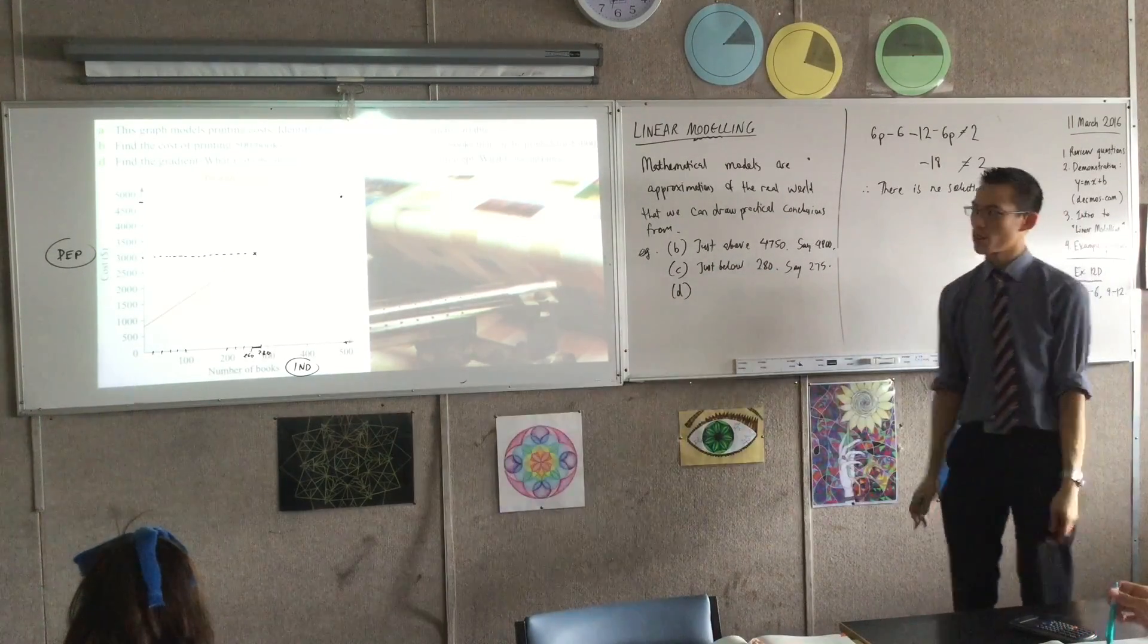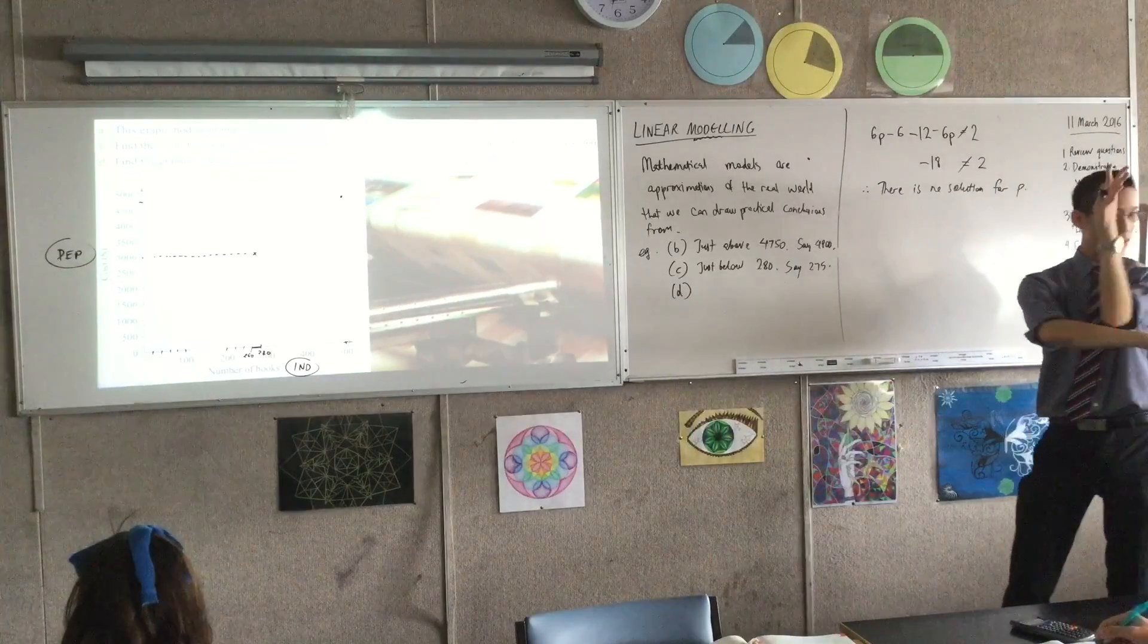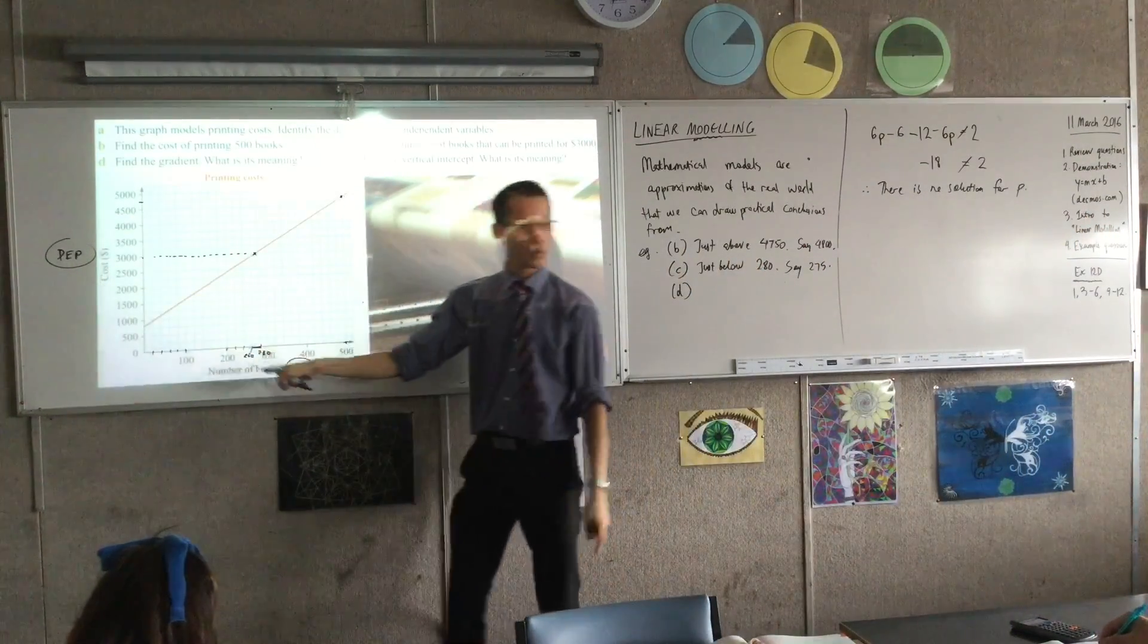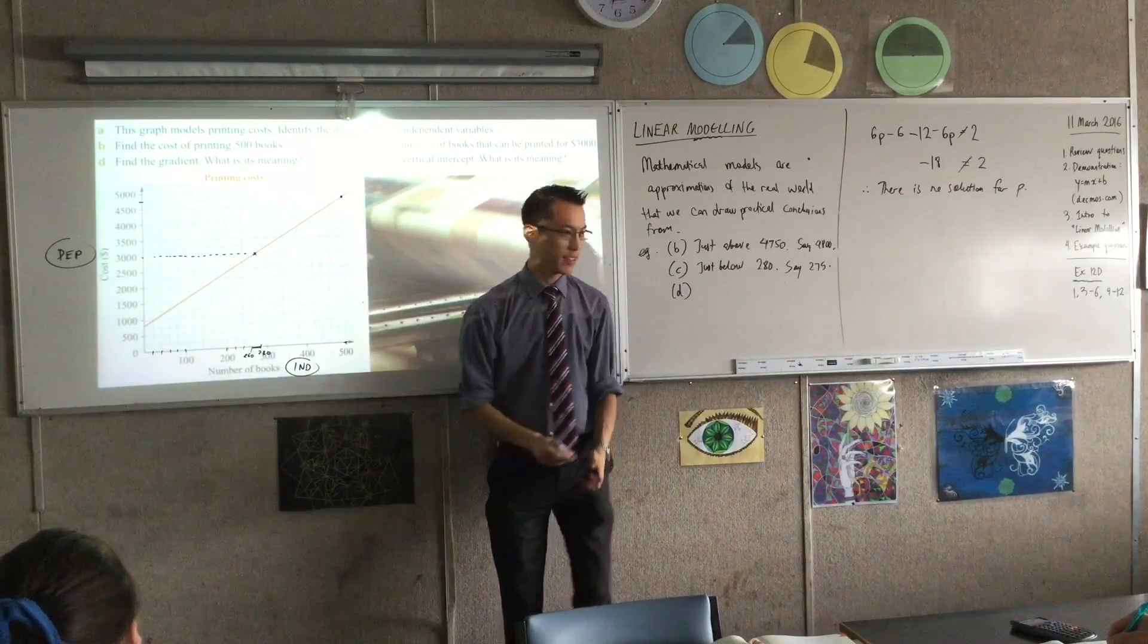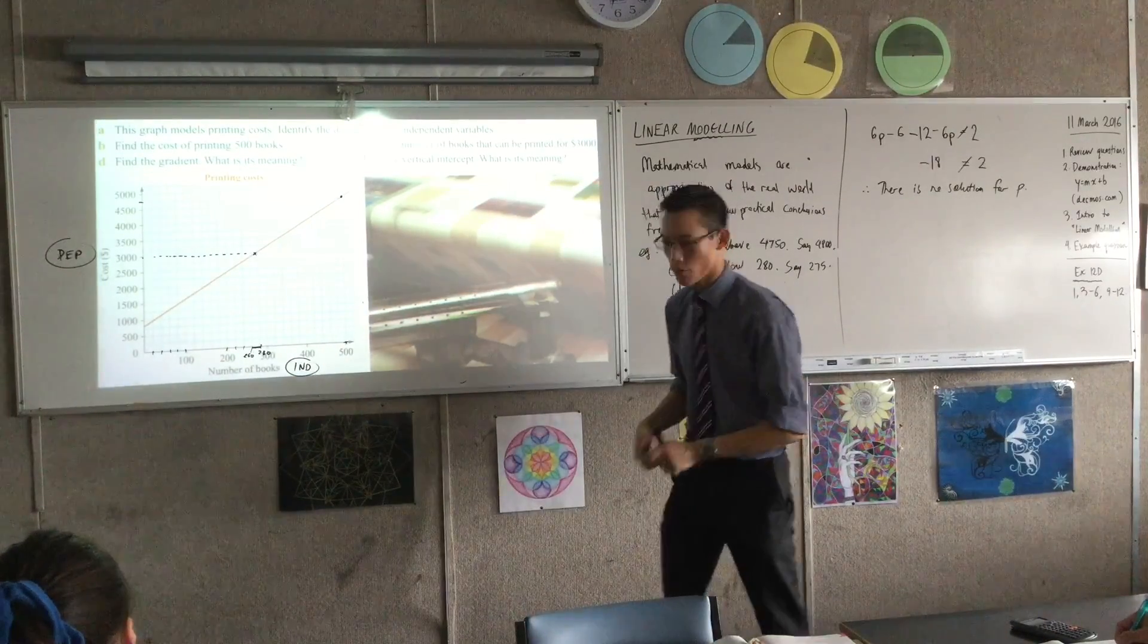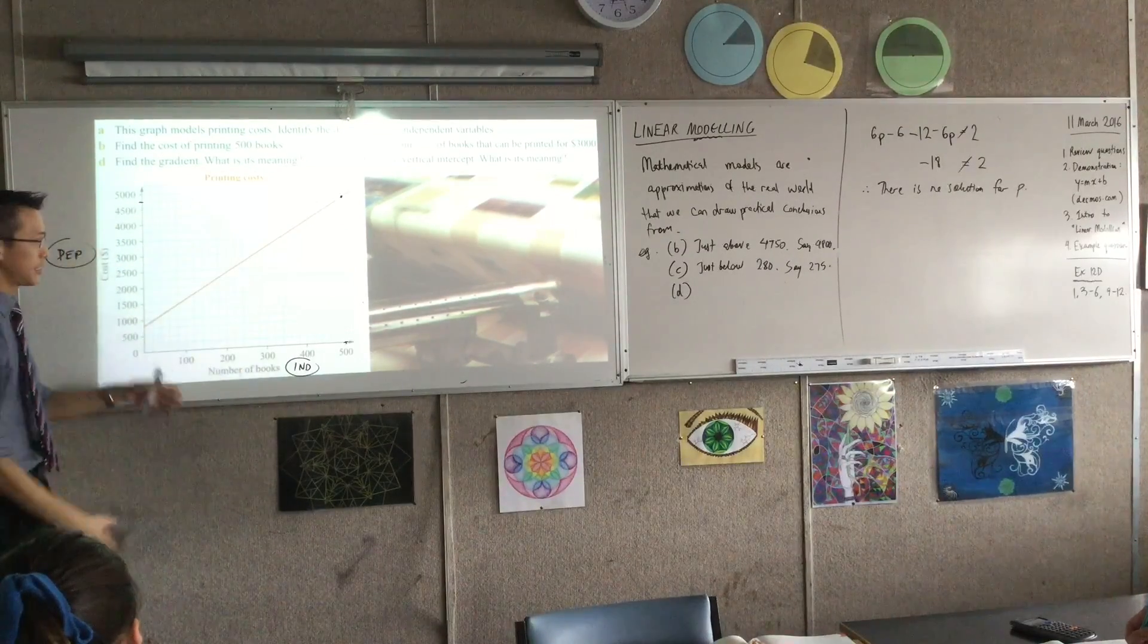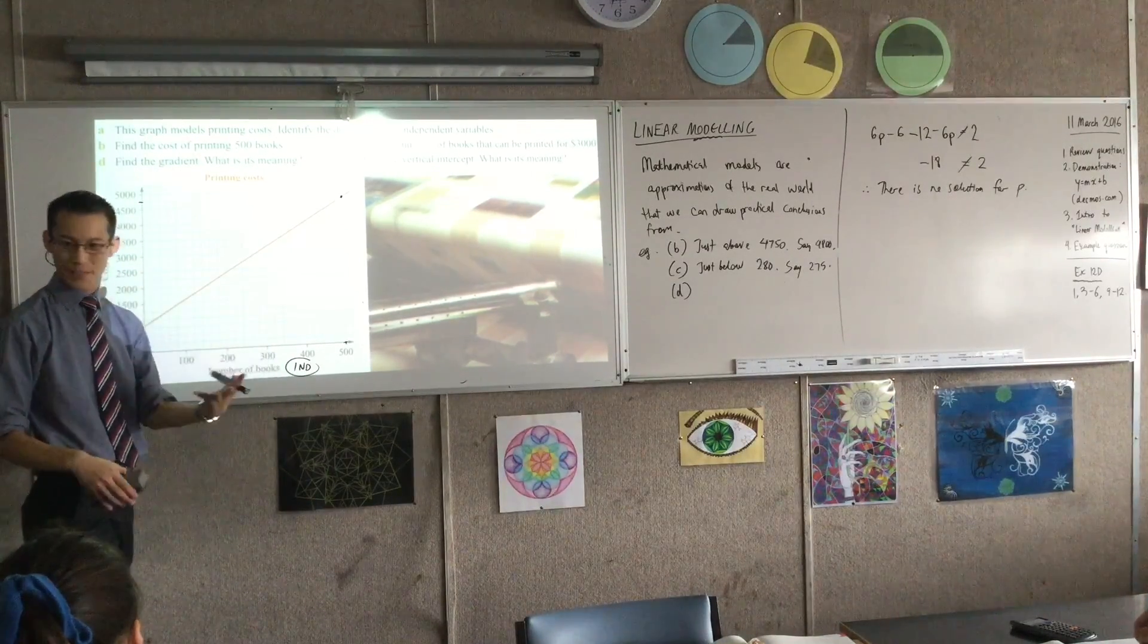Okay. Now we're going to do a bit of interpretation because this is not just some random x and some random y, okay? This is actually, like, quantities from the real world. So find the gradient. What is its meaning? All right, let's rub a few things off this. Do you remember when I showed you that graphing software before and I said, oh, look, here are some triangles. This is how to find the gradient.